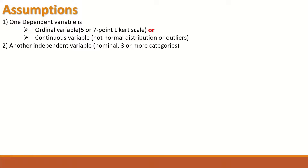The second assumption is that the independent variable must be nominal — meaning group categories. It must have three or more categories in your data to perform the test. So you have a nominal independent variable with three or more categories, and a dependent variable that is either ordinal or continuous. Examples of categories include ethnicity of individuals or professions such as doctors, dentists, nurses, and so on.